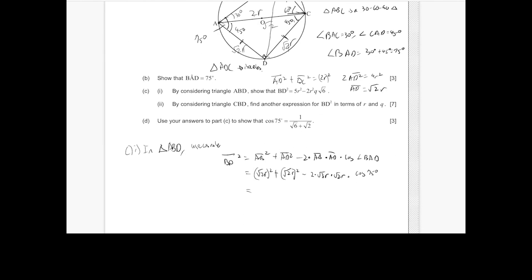And since we just said cosine 75 is Q, we're just going to change this as 3R squared plus 2R squared minus 2 root 6R squared and Q. So we have shown the relationship for C1.